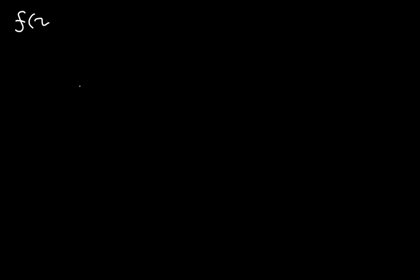Hello. We're finishing up this short series where we're taking some function. This time I'm taking the function f of x is equal to cotangent of x, and I need to find out what the derivative of that function is, which is going to be f prime of x. All right, let's get into it.